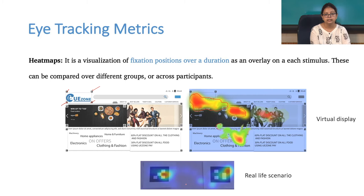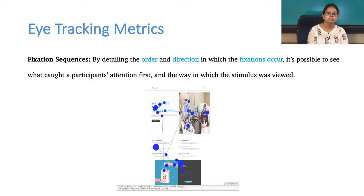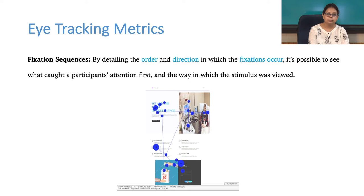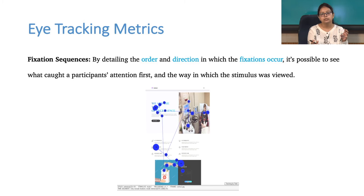The next definition is fixation sequence — it tells us the order and direction in which fixations occur, allowing you to see what caught a participant's attention first and the way in which the stimulus was viewed. For example, on a web page with a logo, textual content, and an image, if the respondent looked at the logo first, then the text, then the image, the sequence or order is captured. You can see several fixations marked in blue on the stimulus, ordered as first, second, third, and so on.